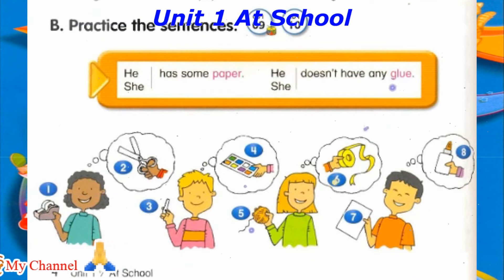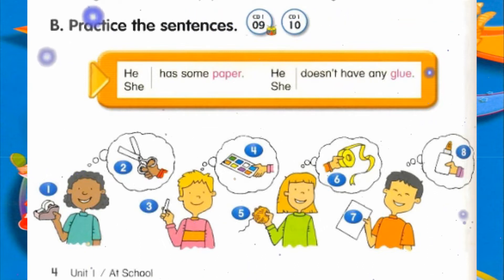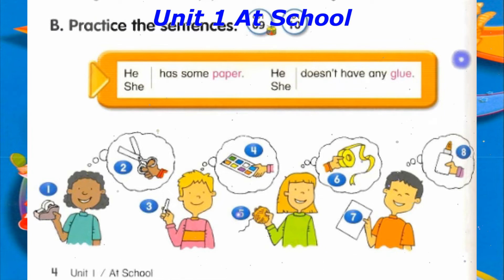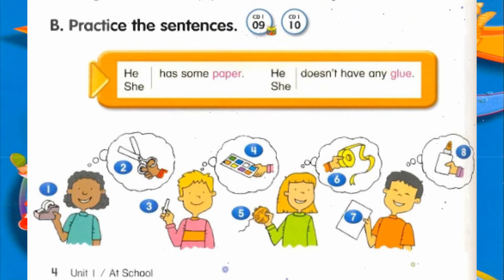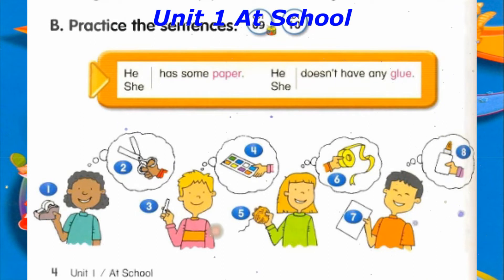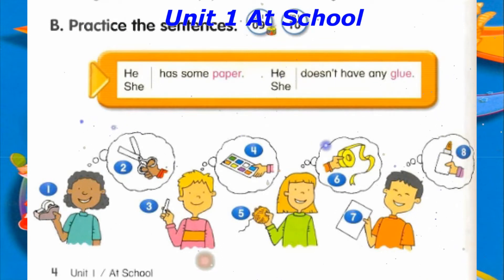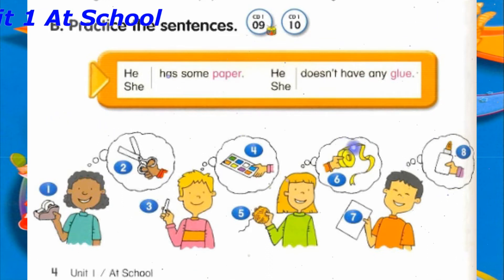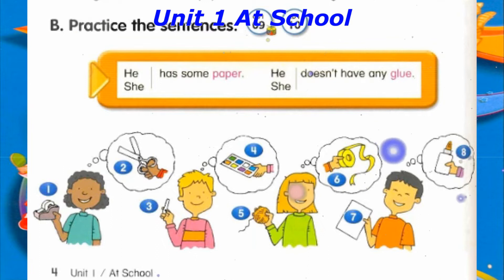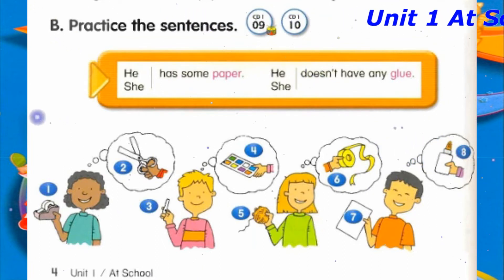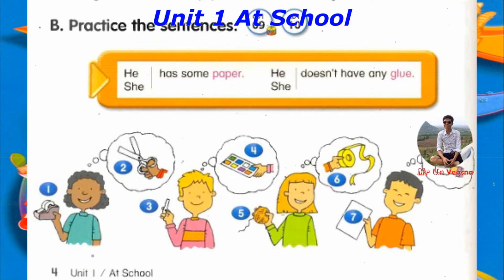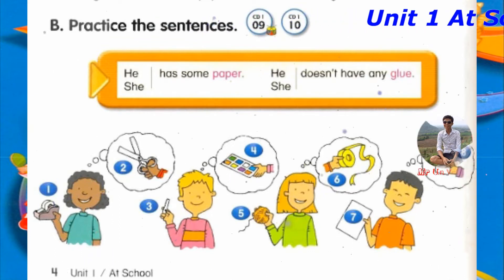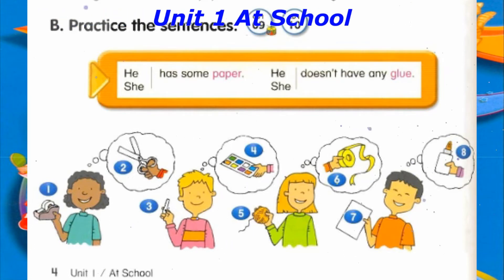Track 10. B. Practice the sentences. Number 1: She has some tape. Number 2: She doesn't have any scissors. Number 3: He has some chalk. Number 4: He doesn't have any glue. Number 5: She has some string. Number 6: She doesn't have any ribbon. Number 7: He has some paper. Number 8: He doesn't have any glue.